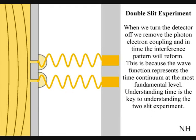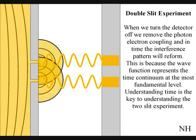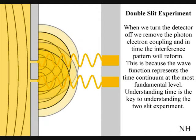When we turn the detector off, we remove the photon-electron coupling, and in time the interference pattern will reform.